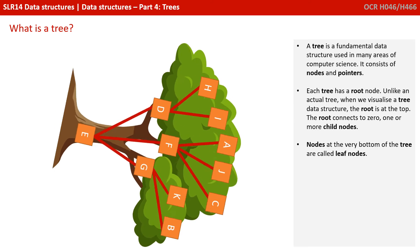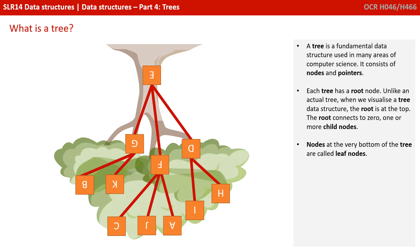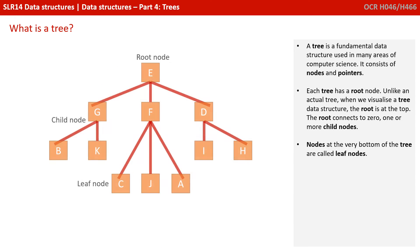Each tree has a root node. Unlike an actual tree, when we visualize a tree data structure, the root is at the top. The root connects to zero, one or more child nodes. Nodes at the very bottom of the tree are called leaf nodes.